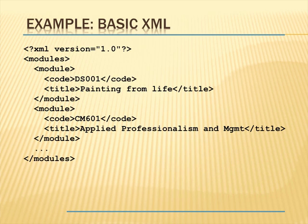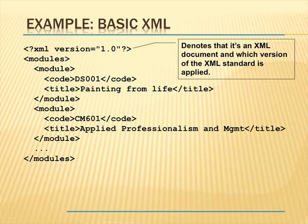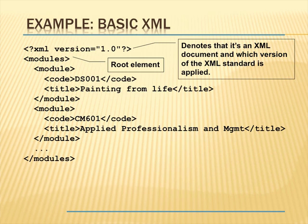Let's look at a basic example. The first line denotes that it's an XML document and also specifies which version of the XML standard is being applied. Then there is always a root element of some description with a matching close tag. So here we've got 'modules' at the start and then an end 'modules', within which in this particular example we've got lots of module elements, and each module element in turn contains other fields.